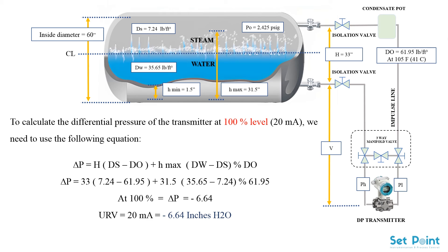Upper range value at 20 milliamps equals minus 6.64 inches H2O.